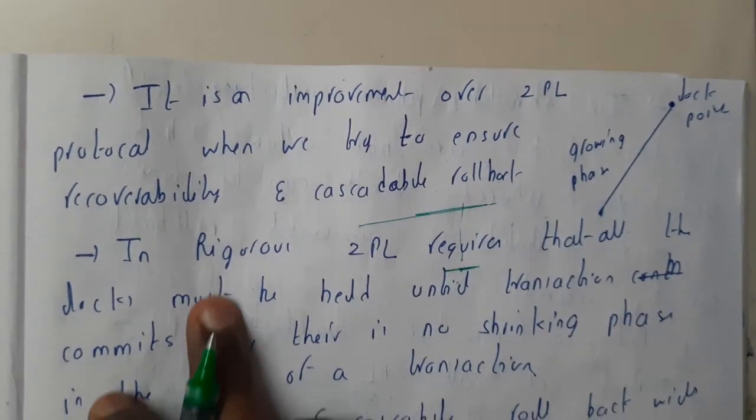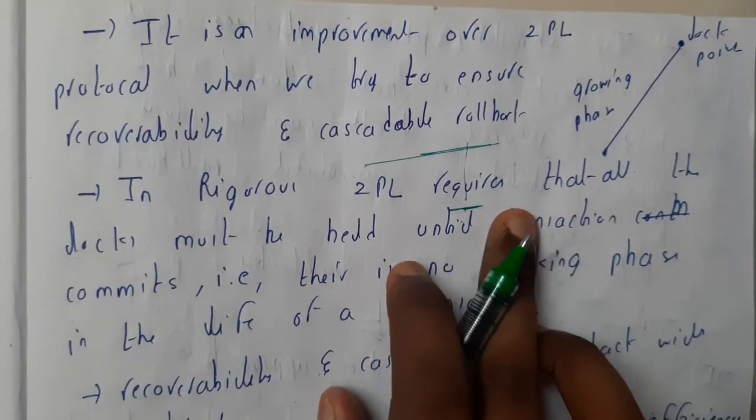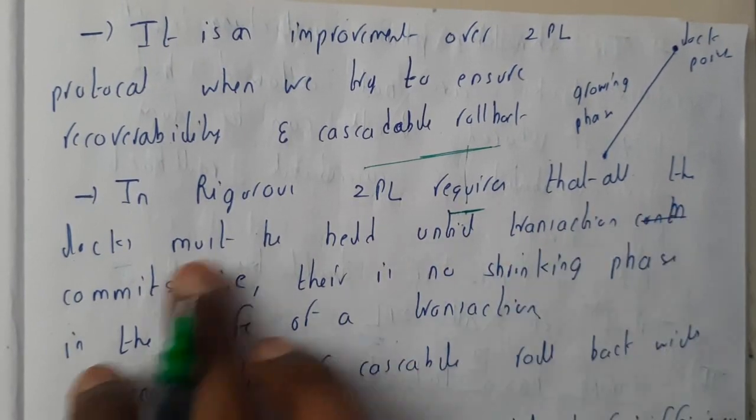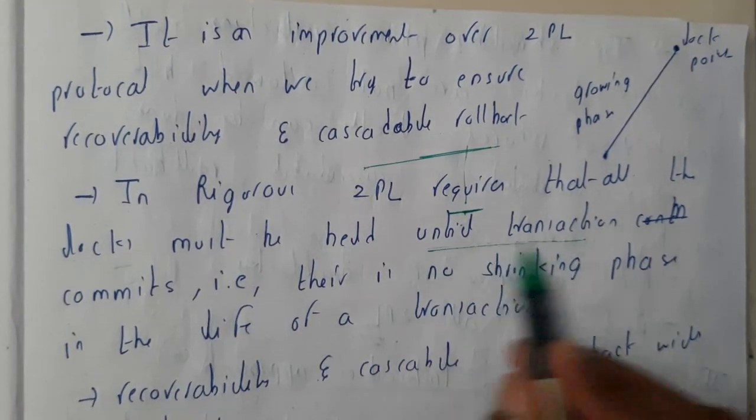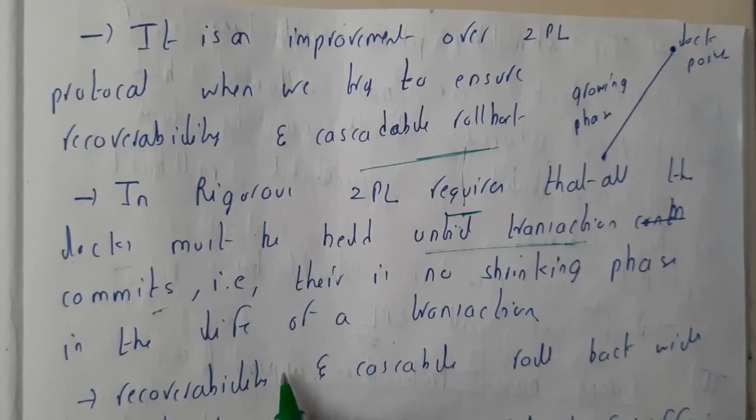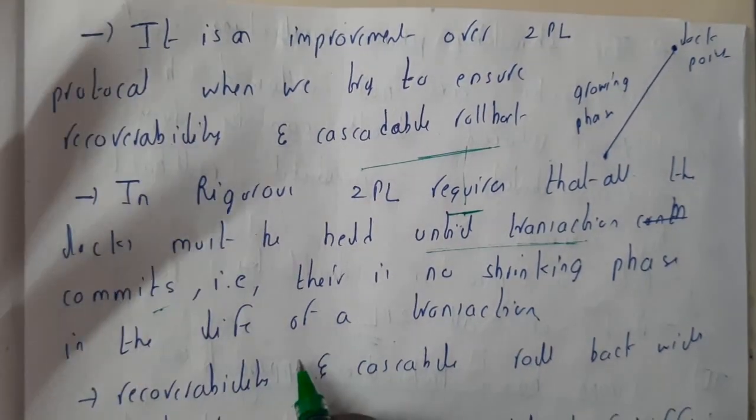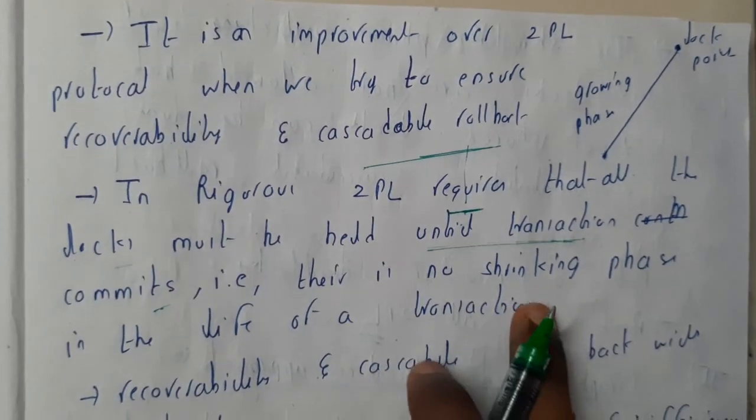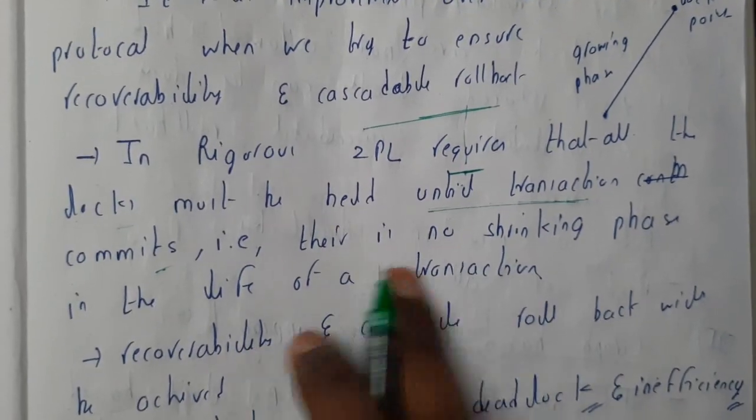In Rigorous 2PL, all locks must be held until the transaction is committed. Once the transaction completes, it commits and then unlocks. That's why there is no shrinking phase in the life of this transaction.